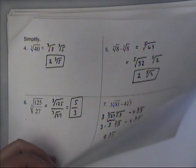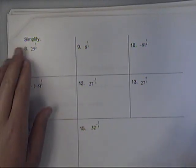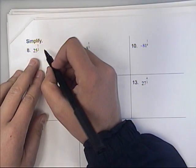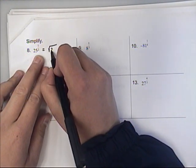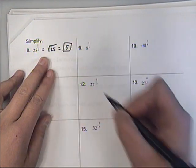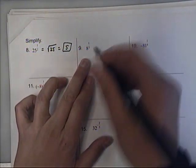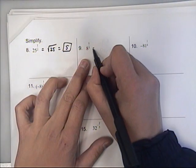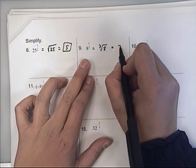Alright, and then the last page. Whenever you have something raised to the 1 half, that's basically just saying the square root. So 25 to the 1 half is just the square root of 25. Likewise, anything raised to the 1 third is just the cube root of something. The cube root of 8 is 2.